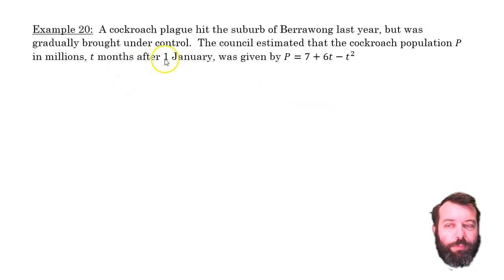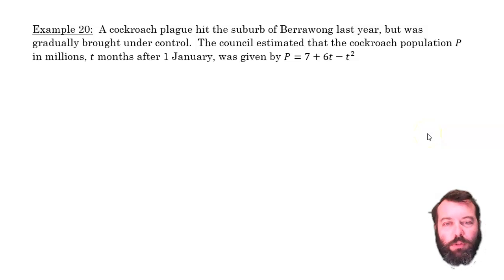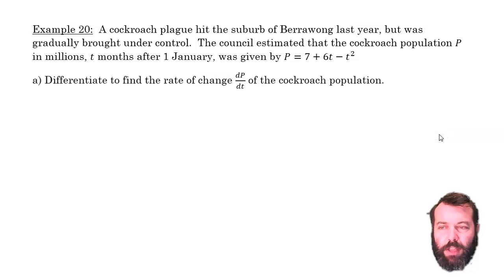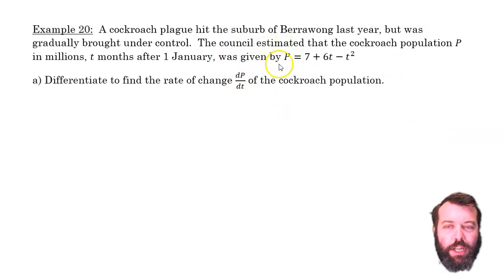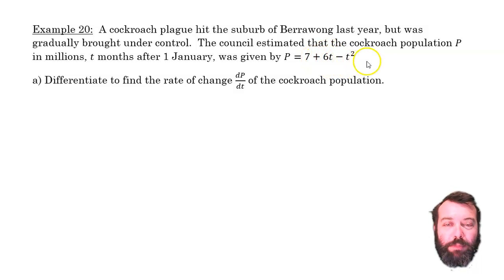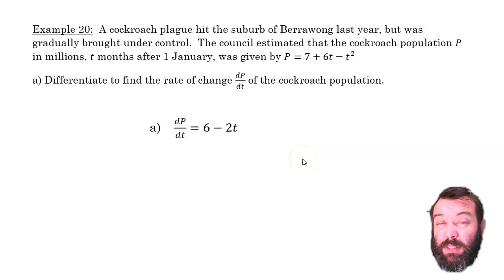So on January 1st, t = 0; on February 1st, t = 1, and so on. First up, differentiate — find dP/dt. Differentiating the function P with respect to t gives us 6 − 2t. Simple as that.